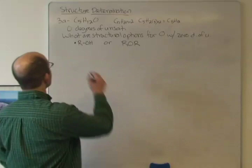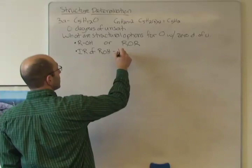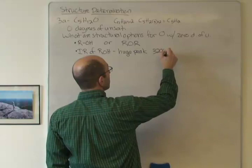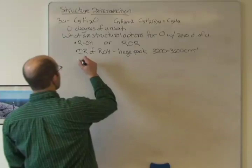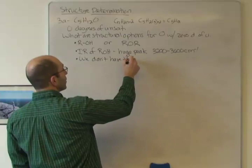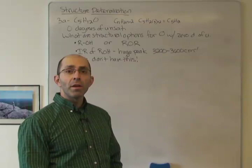So if we look at the IR for this, IR of an alcohol, we have a huge peak somewhere between 3,200 to 3,600 wavenumbers. If we look at the IR for this compound, there is no peak at that position. So IR of an alcohol, huge peak. We don't have this.